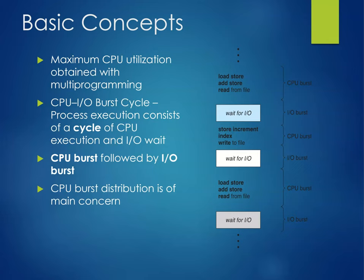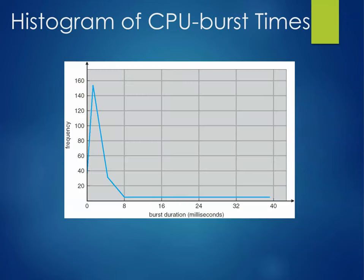For example, we have a CPU burst and then we're going to wait on the IO, going to do another CPU, IO burst and so forth. This is a histogram of averages of CPU burst times. Notice that the frequency is rather low.